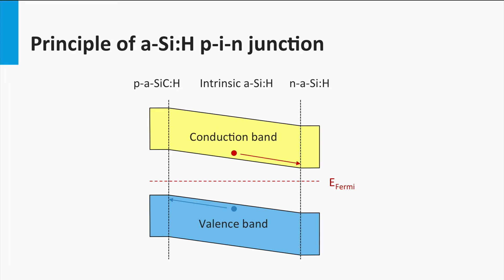Due to the relatively low diffusion length, both the p- and n-layers cannot be too thick. A wafer-based crystalline silicon solar cell is a diffusion device, where diffusion is the dominant transport mechanism in the absorber layer. An amorphous silicon solar cell, however, is a drift device — the dominant transport mechanism in the absorber layer is drift.